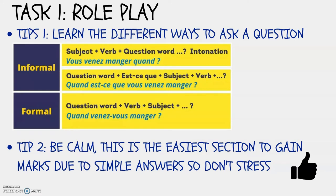My first tip is to learn the different ways to ask a question. This is useful for the questions which will have a question mark on it. There's the informal way using subject, verb, question, verb and intonation, which is just stating a statement with rising intonation instead of using a specific question word, or using a question word in a formal way as well. My second tip is to be calm because this is the easiest section to gain marks due to the simple answers. So don't stress.